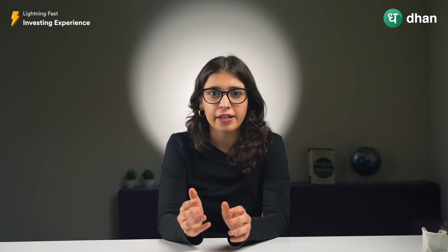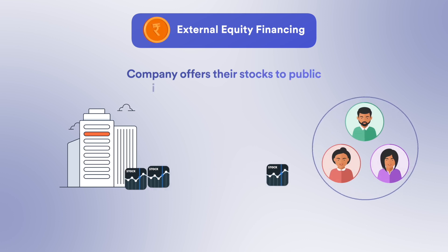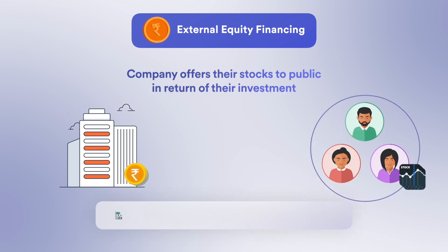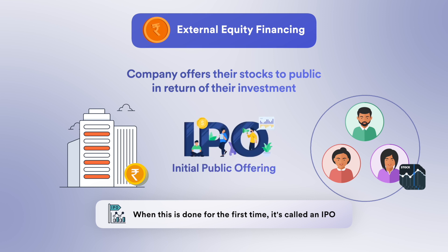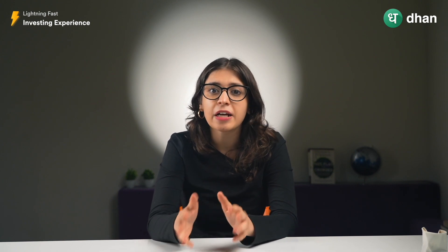Another way of external equity financing is through a public offer. The company offers its shares to the general public in return for investment. When a company does this process for the first time, it is called an Initial Public Offer, or IPO.